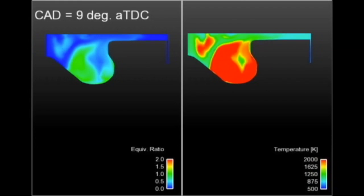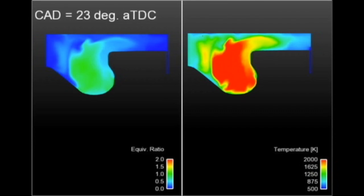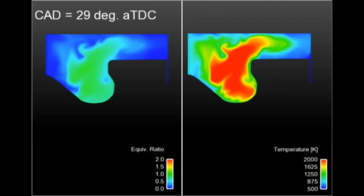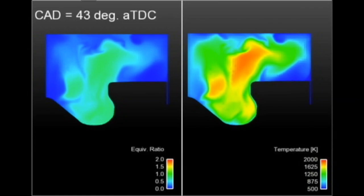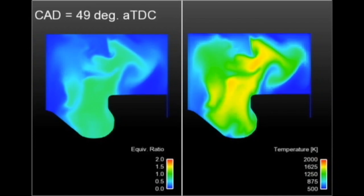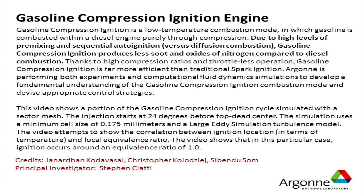The video attempts to show the correlation between ignition location in terms of temperature and local equivalence ratio. The video shows that in this particular case, ignition occurs around an equivalence ratio of 1.0.